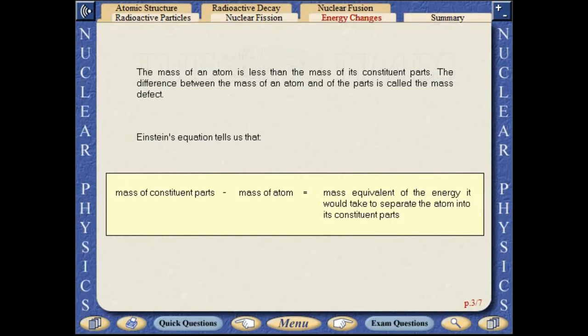The mass of an atom is less than the mass of its constituent parts. The difference between the mass of an atom and of the parts is called the mass defect. Einstein's equation tells us that the mass of the constituent parts minus the mass of the atom equals the mass equivalent of the energy it would take to separate the atom into its constituent parts.